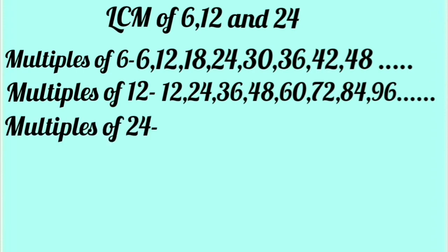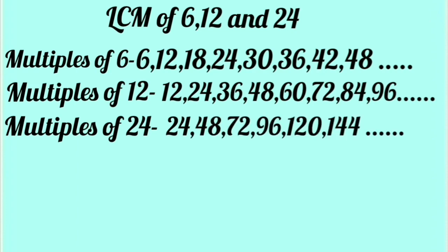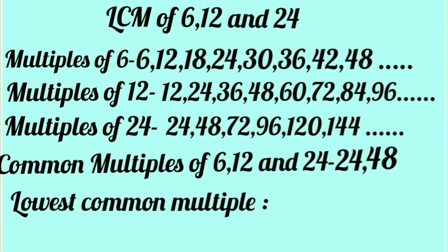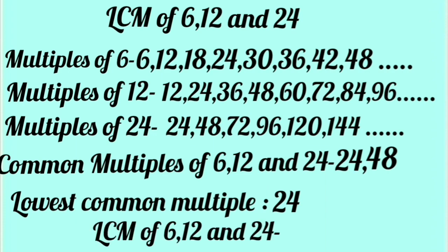Now, we will write multiples of 24: 24, 48, 72, 96, 120, 144 and so on. Now, which are common multiples of 6, 12 and 24: 24, 48, but lowest common multiple is 24. So, LCM of 6, 12 and 24 is 24.